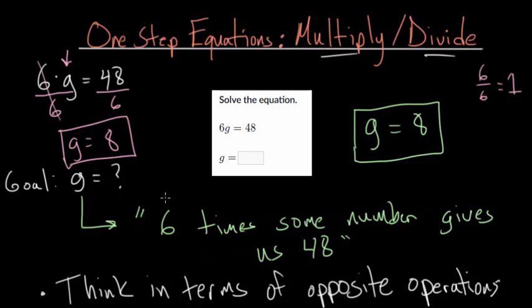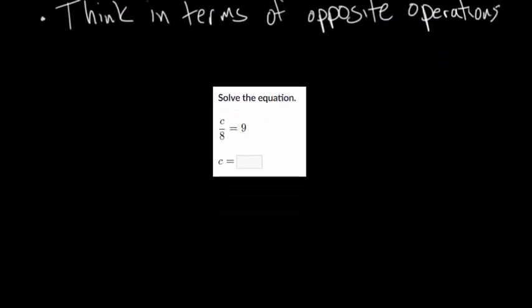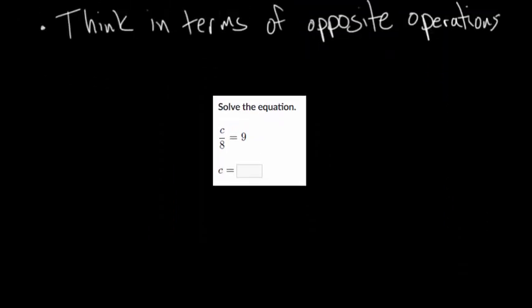So just keep in mind that if you do one thing to one side of the equation, you have to do the exact same thing to the other side of the equation. Otherwise, you completely change the equation and you're going to get an answer that doesn't make sense. So let's move on and try some other questions now that we have the strategy down. So again, we're thinking in terms of opposite operations for all of these.